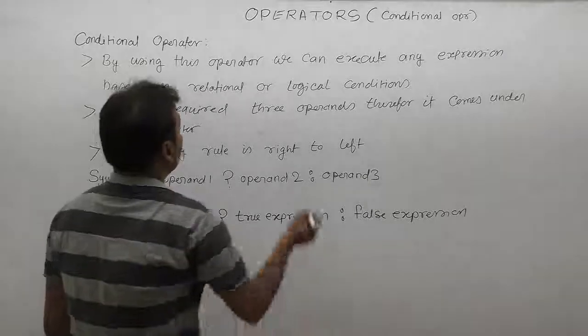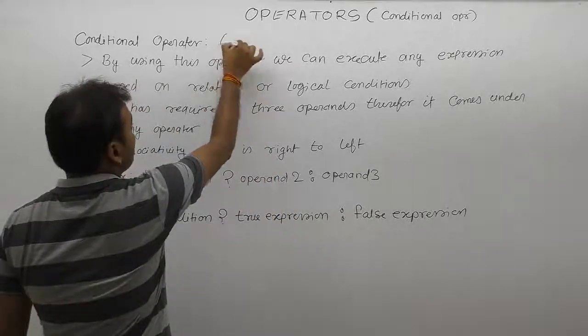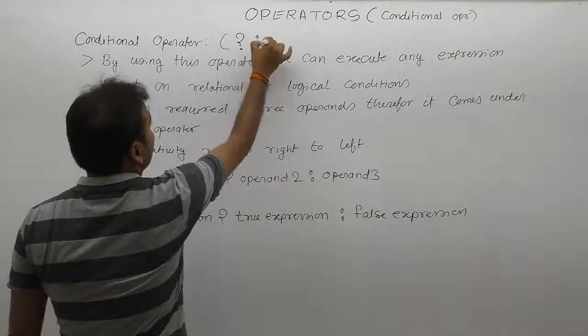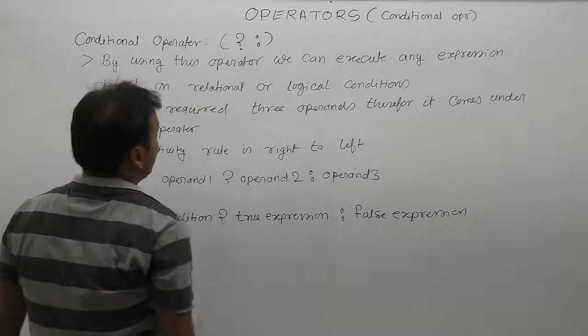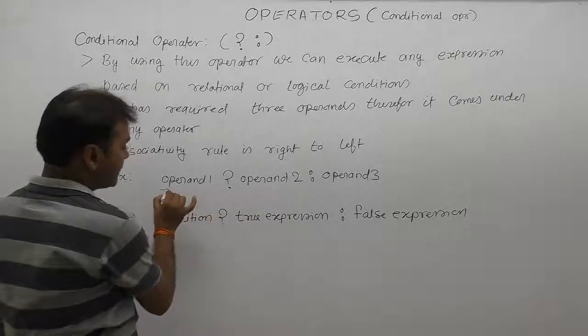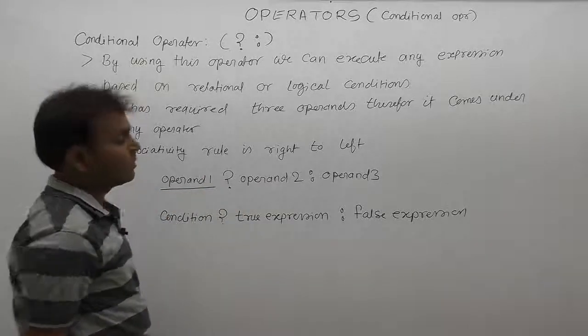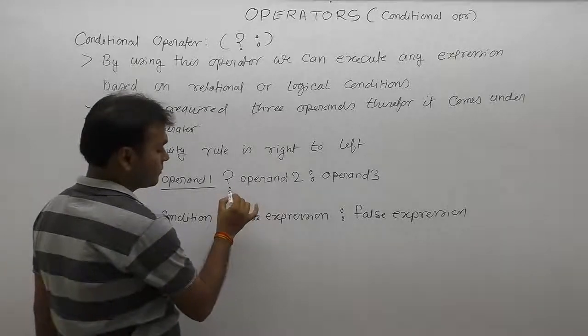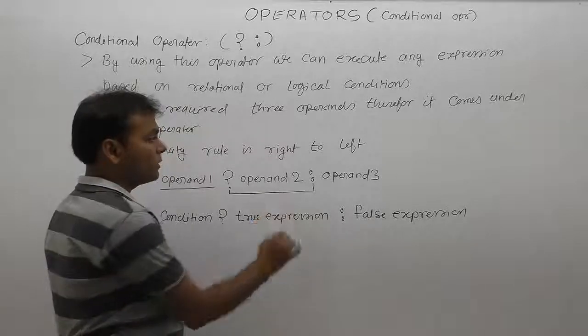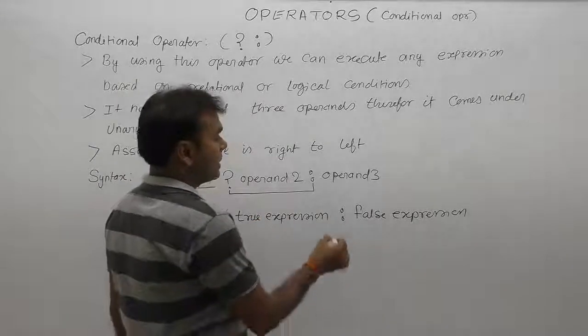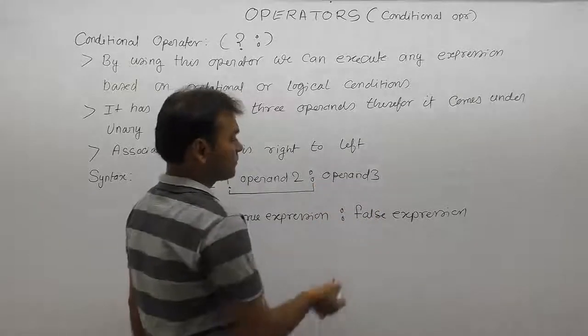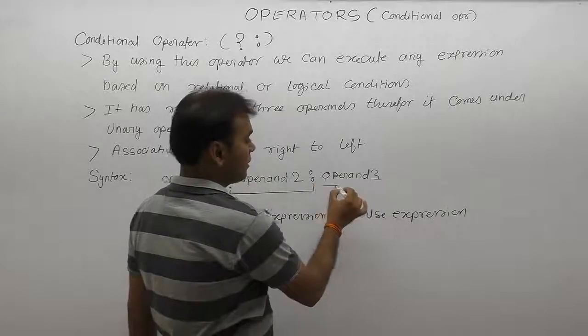The conditional operator is represented by a combination of two symbols: question mark and colon. Whatever comes before the question mark is considered as operand 1. Whatever comes between question mark and colon is considered as operand 2. Similarly, whatever comes after colon up to highest priority comes under third operand.